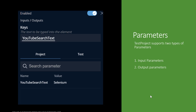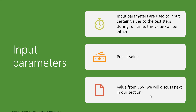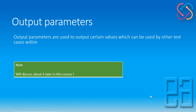Input parameters and output parameters. Input parameters are used to input certain values to the test steps during runtime. This value can be either a preset value or it can be a value from a CSV file. We'll discuss about setting a value from a CSV file in our next video of this section. As of now, stay informed that we can input two types of value within this input parameter.